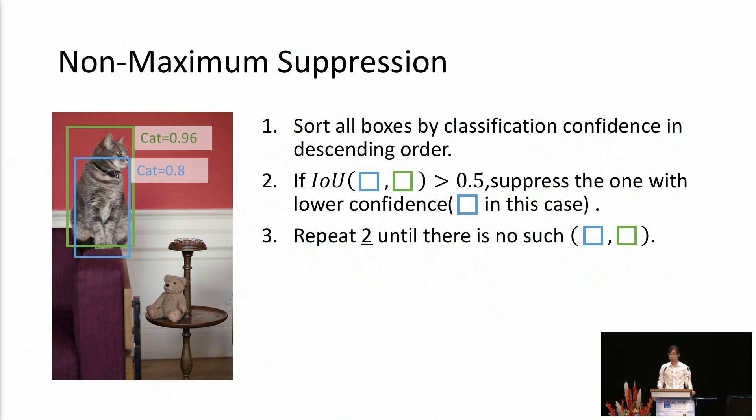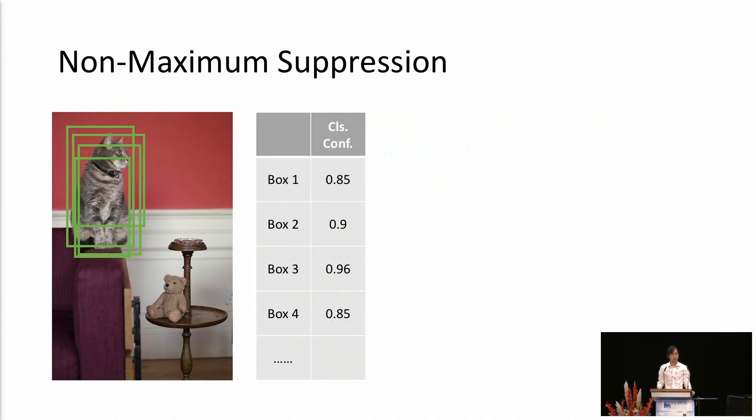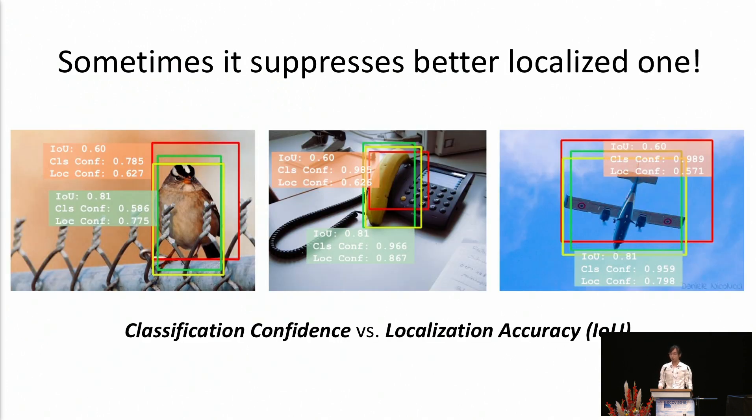Now, we look at the traditional non-maximum suppression algorithm. It begins with sorting all boxes by their classification confidence in a descending order. If we find two boxes having a high IOU, say greater than 0.5, we suppress the one with lower classification confidence. The intuition behind this algorithm can be seen in the following example. Suppose we have a set of detected bounding box for the single object. We look at the classification confidence for the detections and only keep the box with the highest classification confidence. So far, it looks good. However, if we look at the localization of the bounding boxes,